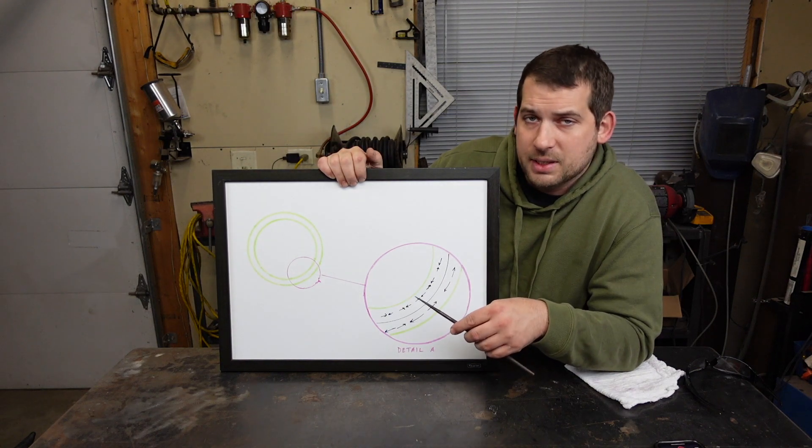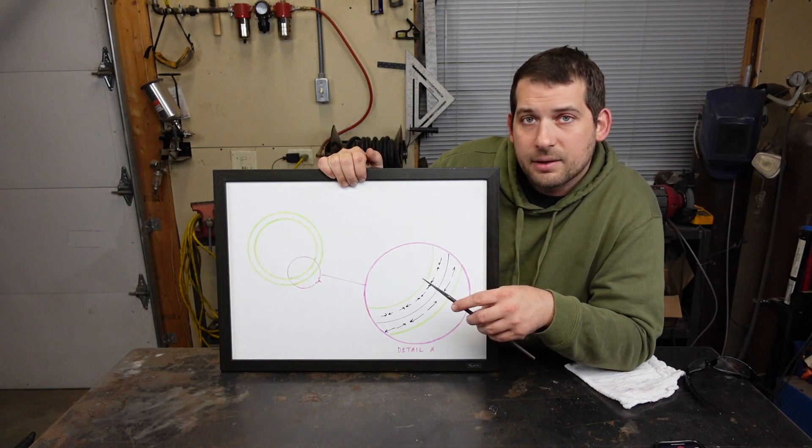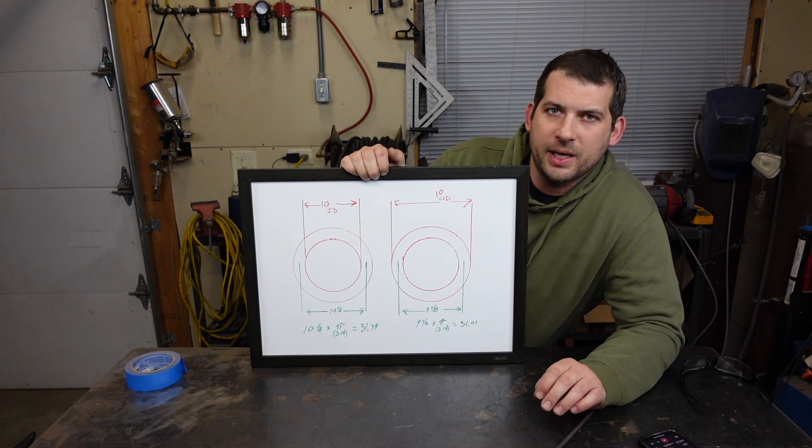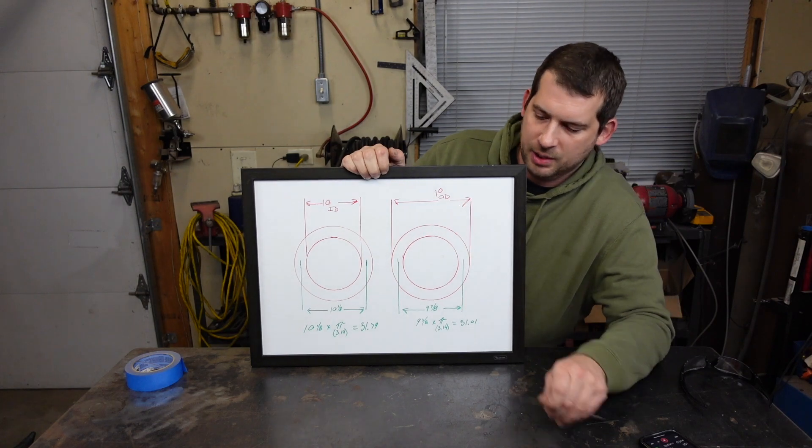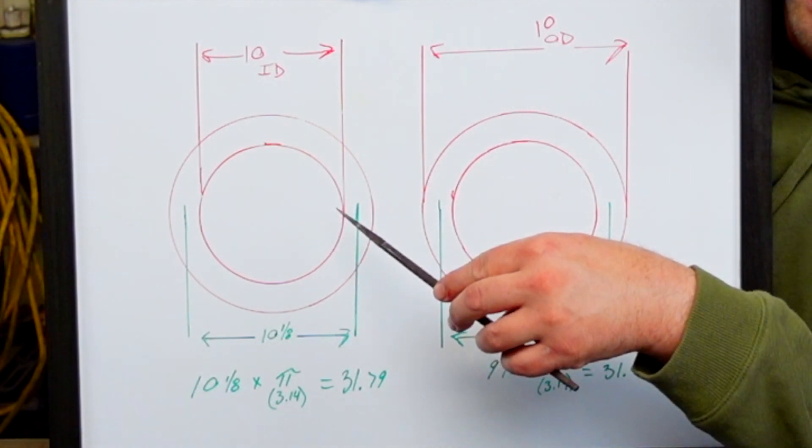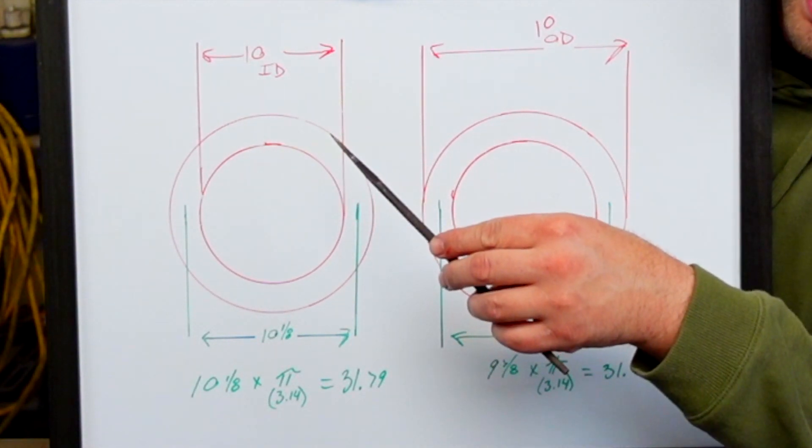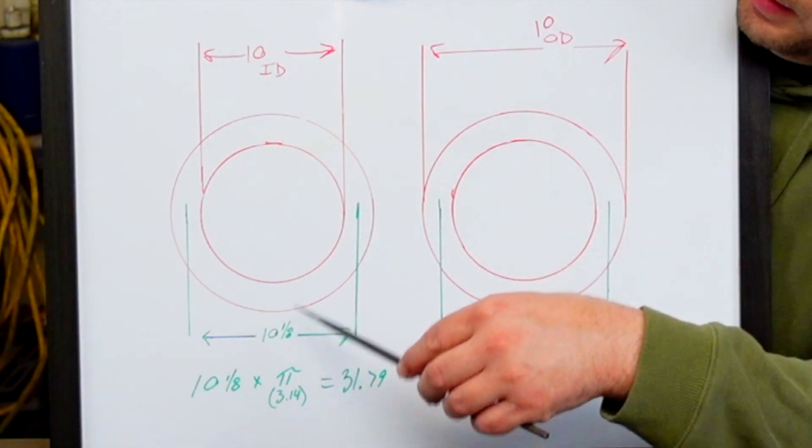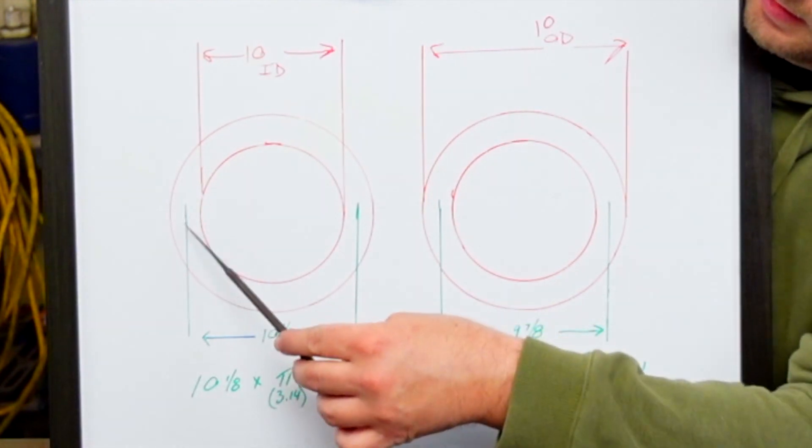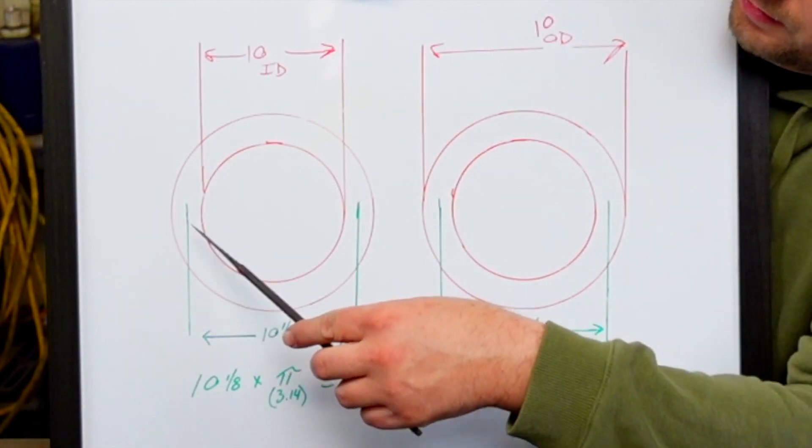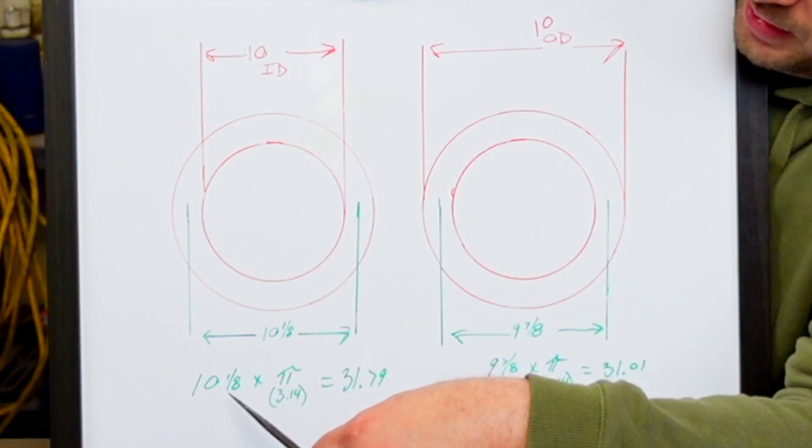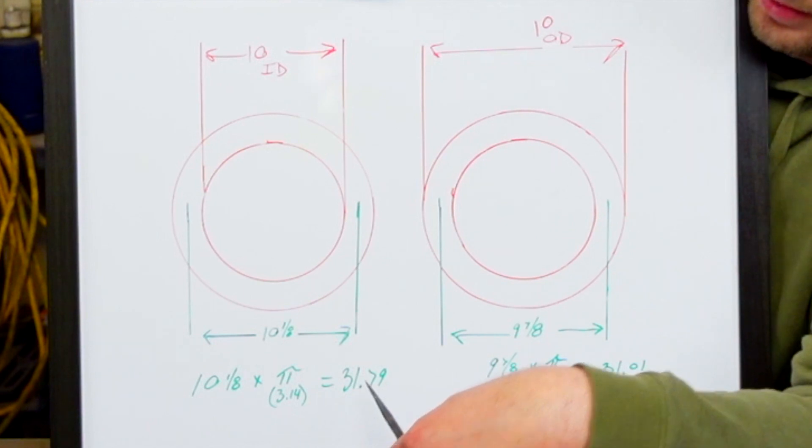So let's go ahead and cut a couple pieces for a 10-inch ID ring and a 10-inch OD ring. Alright, so we're going to cut two blank outs for two circles. The first one is going to be 10-inch ID as you can see here, and so if we're going diameter times pi, we need to increase this number by a sixteenth over here and a sixteenth over here to get to where our neutral axis is, so 10 and an eighth. And so we'll get 10 and an eighth times pi, and we get 31.79.